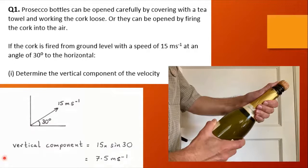Okay, well a diagram is always helpful and here we can see vertical component is 15 times the sine of the angle, so 15 sine 30 which equals 7.5 meters per second.